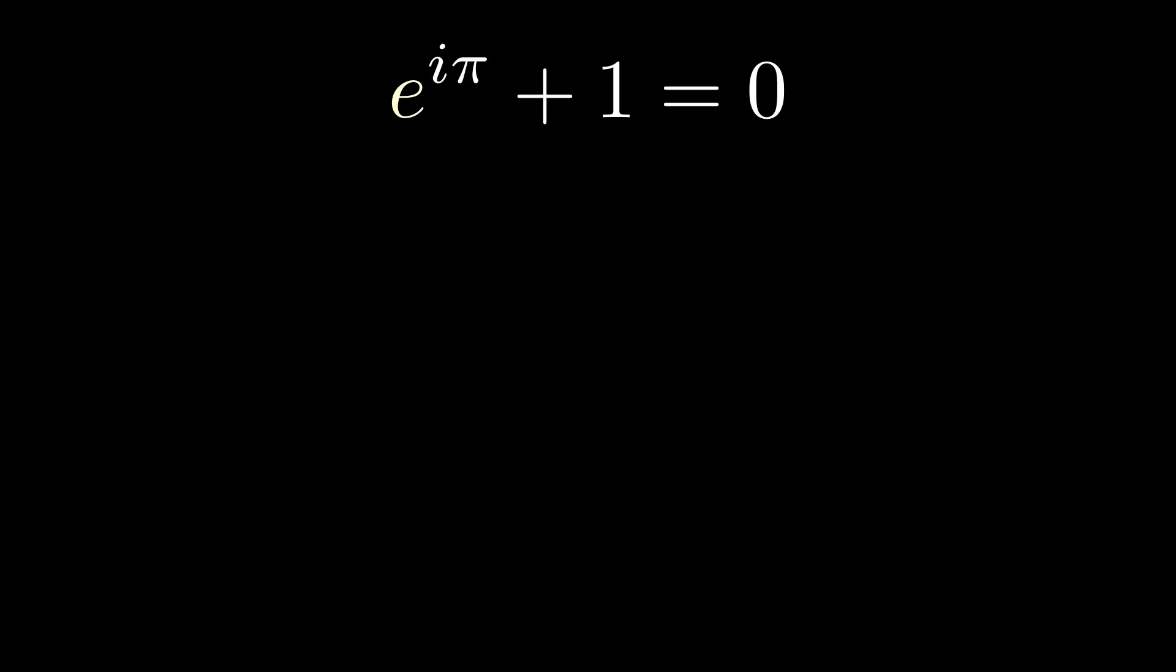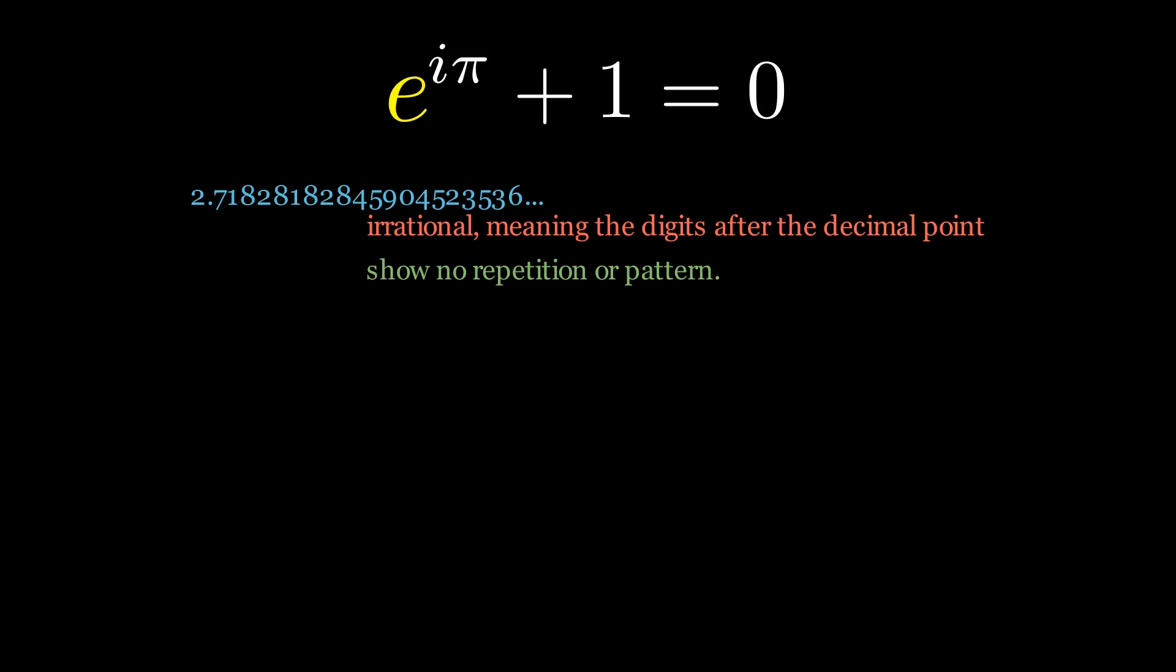First, we have the number e. This is an irrational number, meaning its decimal expansion neither repeats nor terminates, so it cannot be represented as the ratio of integers.